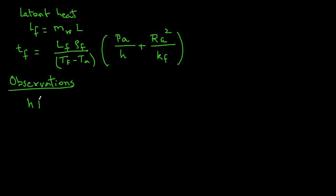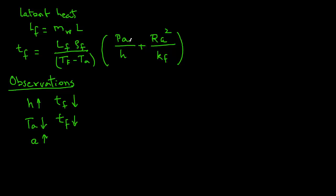We can make some observations from this equation. If the convective heat transfer coefficient H increases, then the freezing time will decrease — in other words, if we use forced convection during freezing, the time for freezing will decrease. Similarly, if we decrease the surrounding temperature Ta, then the freezing time will decrease, which makes sense: if our freezing air temperature is lowered, we will be able to freeze faster. Also, if the value of A — the thickness of the slab — increases, then the freezing time will also increase. Note that since we have A², the impact of a change in thickness is very profound; a slight increase in the size of the product can result in significantly longer freezing periods.